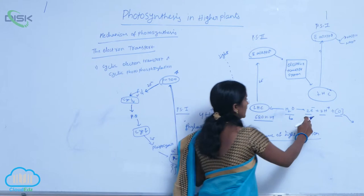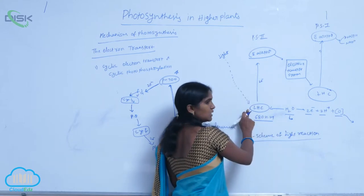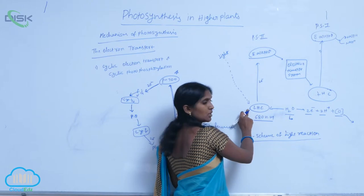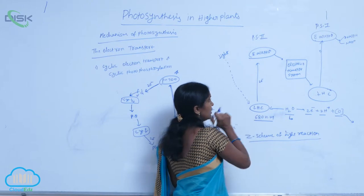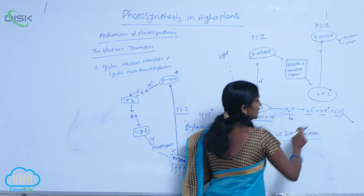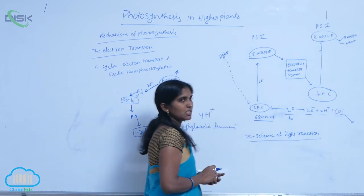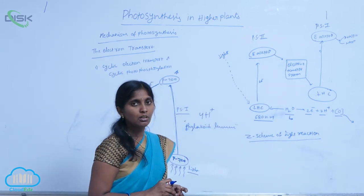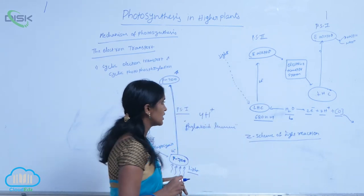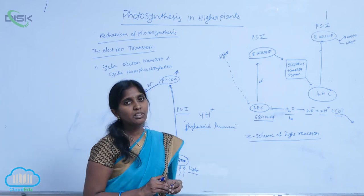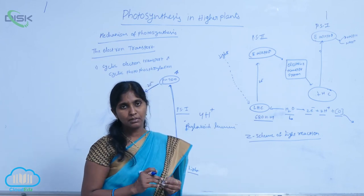The electrons are utilized to reduce the LHC of PS2, and these protons are entered into the lumen of thylakoids. There, proton translocation occurs.